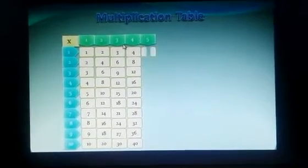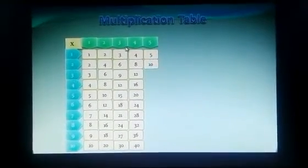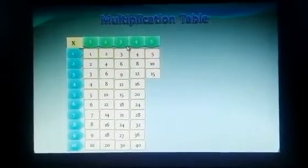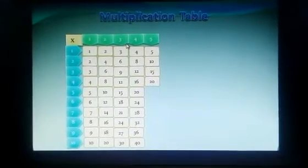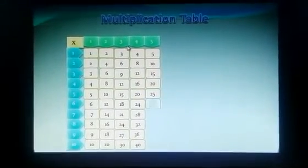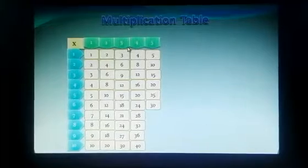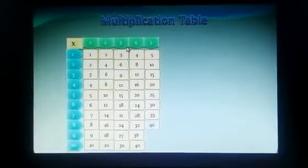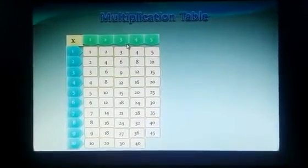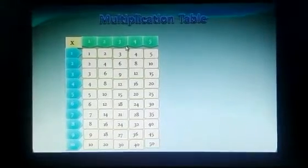Times table of 5. 5 times 1 is 5, 5 times 2 is 10, 5 times 3 is 15, 5 times 4 is 20, 5 times 5 is 25, 5 times 6 is 30, 5 times 7 is 35, 5 times 8 is 40, 5 times 9 is 45, 5 times 10 is 50.